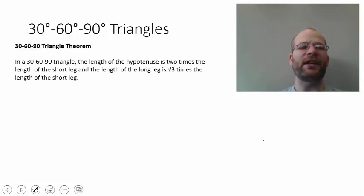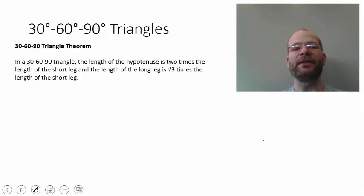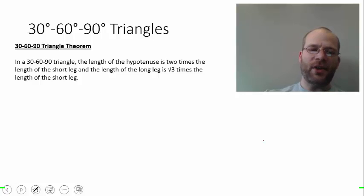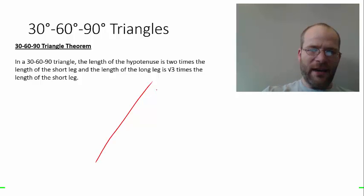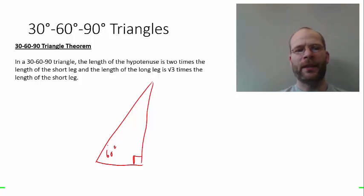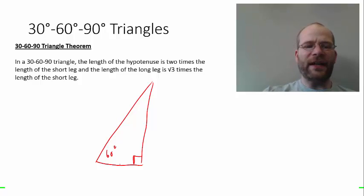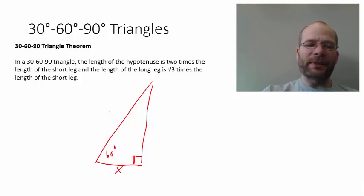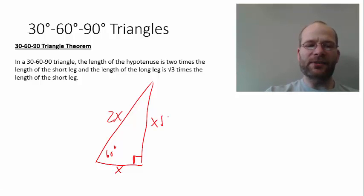The 30-60-90 triangle theorem says: in a 30-60-90 triangle, the length of the hypotenuse is 2 times the length of the short leg, and the length of the long leg is the square root of 3 times the length of the short leg. So if we identify the short leg as x, the hypotenuse is 2x and the long leg is x times the square root of 3.